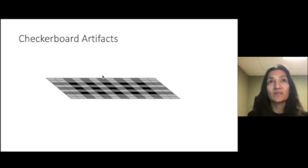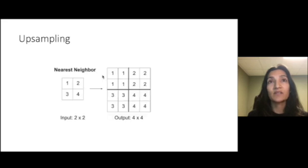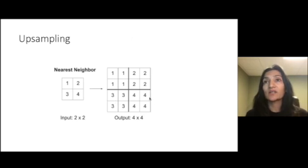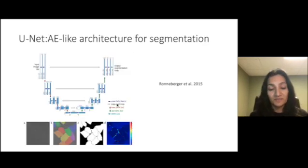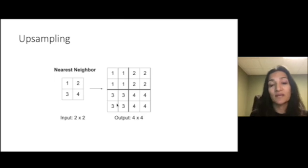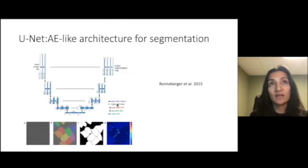One problem with the transposed convolutions though is that they lead to somewhat of checkerboard patterns. So, an alternative way to do increase in dimensionality is called upsampling. Here you take just this value and sample it up. So, you spread it out to four pixels in a higher dimensional image. And now, after you have this, you can use a normal convolution, the kind we talked about in the beginning of this lecture, to alter the values here. So, that's called upsampling. That's actually used a lot more than transposed convolutions.